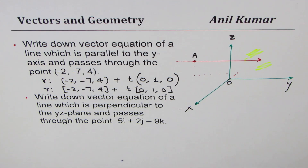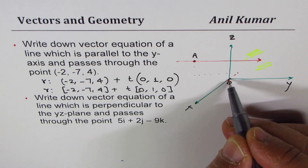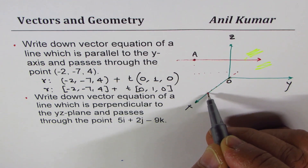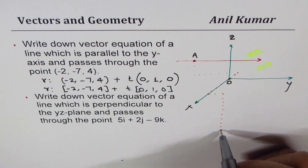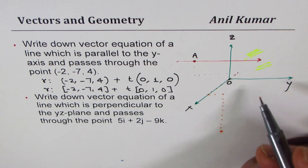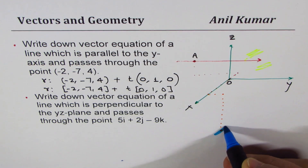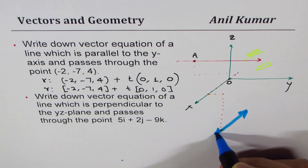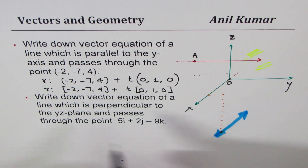We are given the point 5i + 2j - 9k. So 5j means move 5 units, 2j means 1-2, and minus 9k means going down — so somewhere there is your point. What you are doing here is only moving perpendicular to this particular plane, and therefore your line will be going into or coming out of it. So you are moving along x.